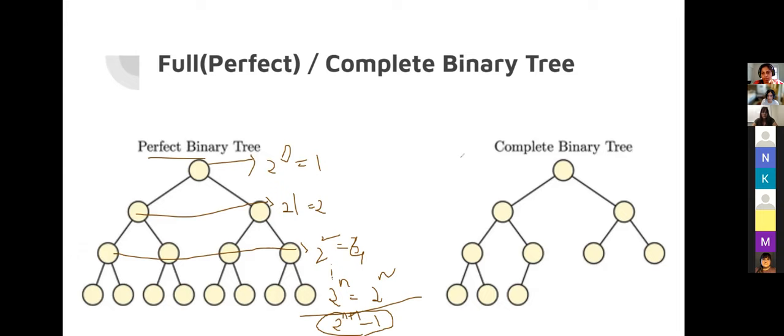A complete binary tree is similar to a perfect tree, but the last level can have incomplete nodes — the N-1 level is completely full, but the last level could be partially filled, and those nodes that are present should be filled from the left. If nodes on the last level are not left-aligned, it's not a complete binary tree.